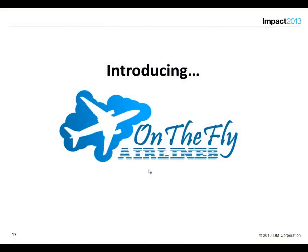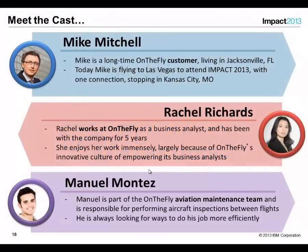Let's dive into our scenario. I want to introduce On-the-Fly Airlines — a fictional airline we'll use as the basis for our conversation today. We're going to look at the story through three primary perspectives. First, Mike Mitchell — a long-time On-the-Fly customer who lives in Jacksonville, Florida. We're going to watch Mike take a flight from Jacksonville all the way to Las Vegas to attend the IBM Impact 2013 conference, with a connection in Kansas City, Missouri.